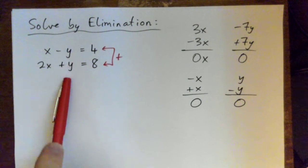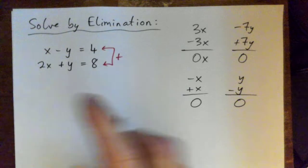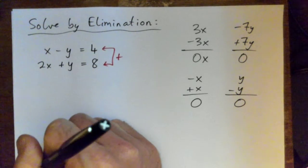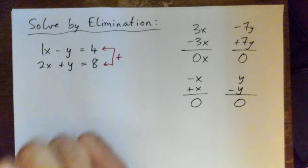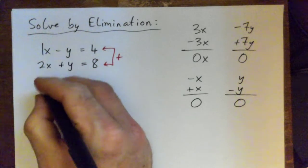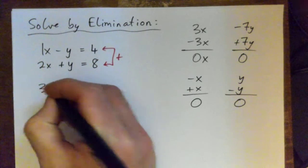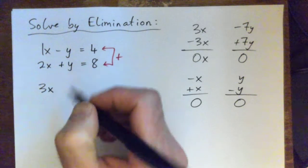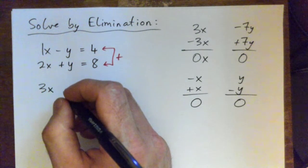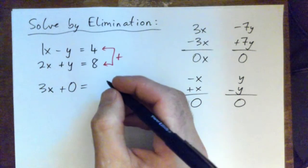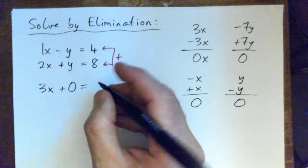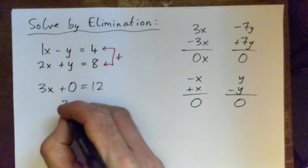So this is a 1x, so 1x and 2x gives us 3x. Lovely. And then negative y plus y is 0. I'll just plug in 0, doesn't matter. Equals 12. So in other words, you've got 3x equals 12.